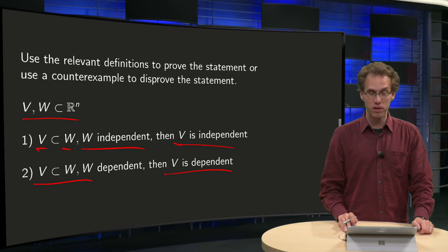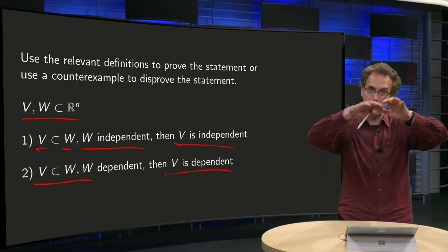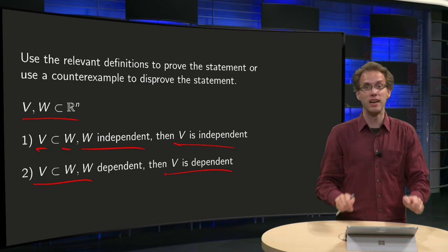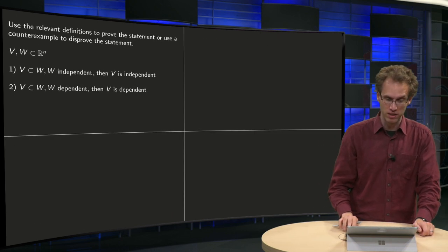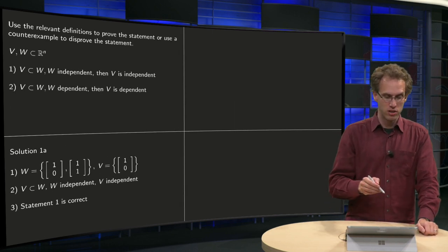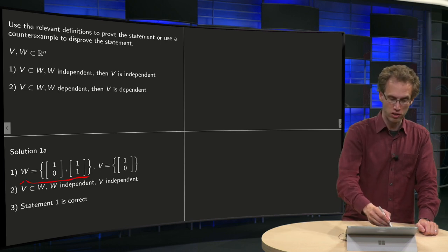Well, let's have a look. First we look at statement 1, and we try to prove that if you have a big set which is independent, now if you take a smaller set, that the smaller set is still independent. Well, a first proof could go like this. So we have some big set consisting of two vectors, we take some subset,